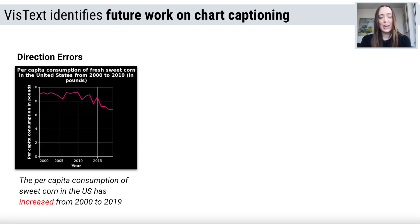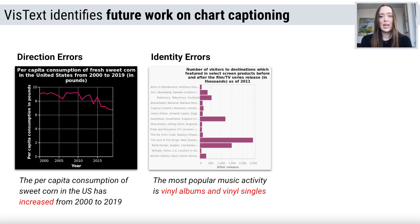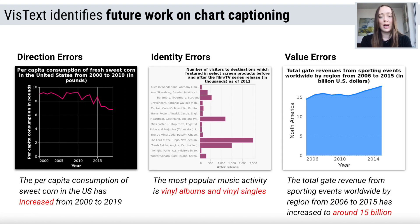Recurring errors include incorrect trend directions, incorrect min and max values, and incorrect data values. These errors signal that there is future modeling work to be done before chart captioning models can be deployed.